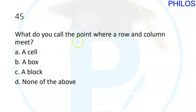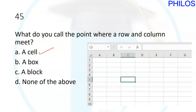Question forty-five: what do you call the point where a row and a column meet? It is a cell. Where a row and column intersect is a cell.